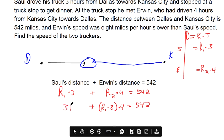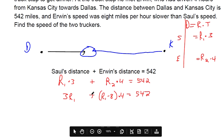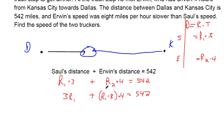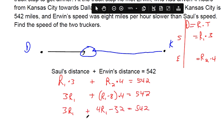That substitution is probably the hardest but most important part of this problem. We write Saul's term as 3R sub 1, and substitute for Erwin's distance: 4 times (R sub 1 minus 8). So the equation becomes 3R sub 1 plus 4(R sub 1 minus 8) equals 542. Now we distribute the 4, which gives minus 32, and combine like terms: 3R sub 1 plus 4R sub 1 makes 7R sub 1.